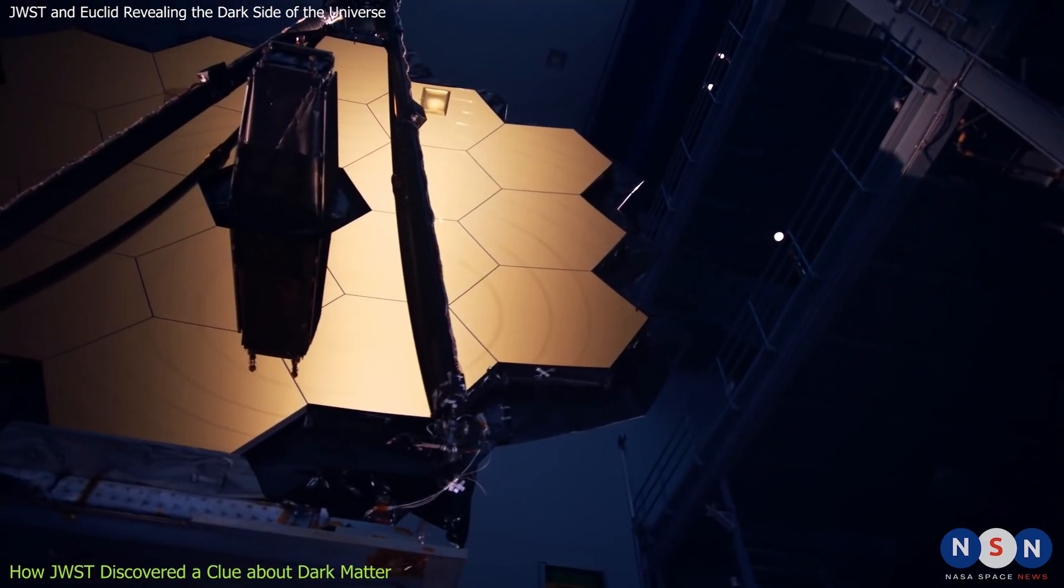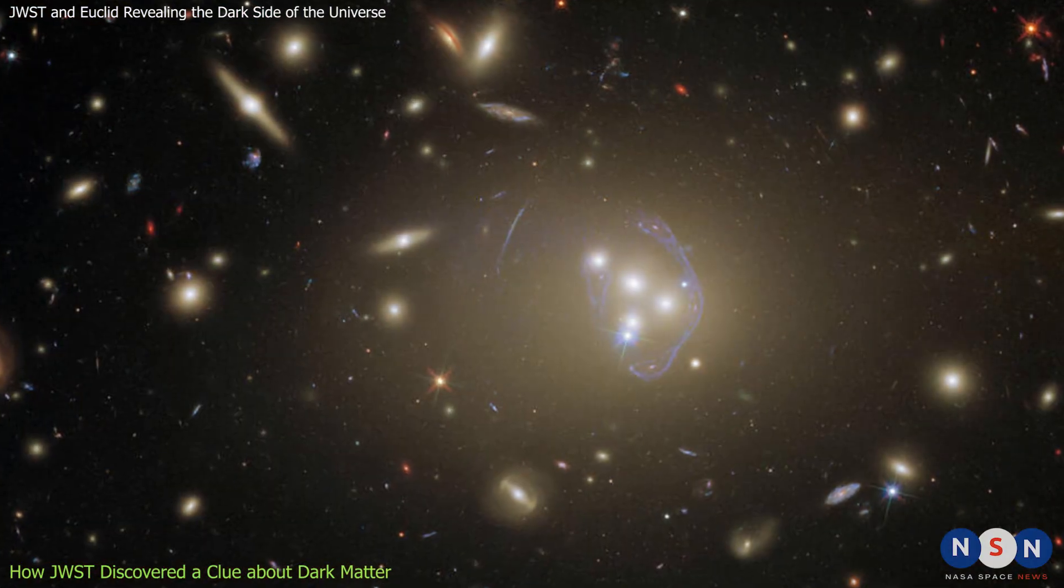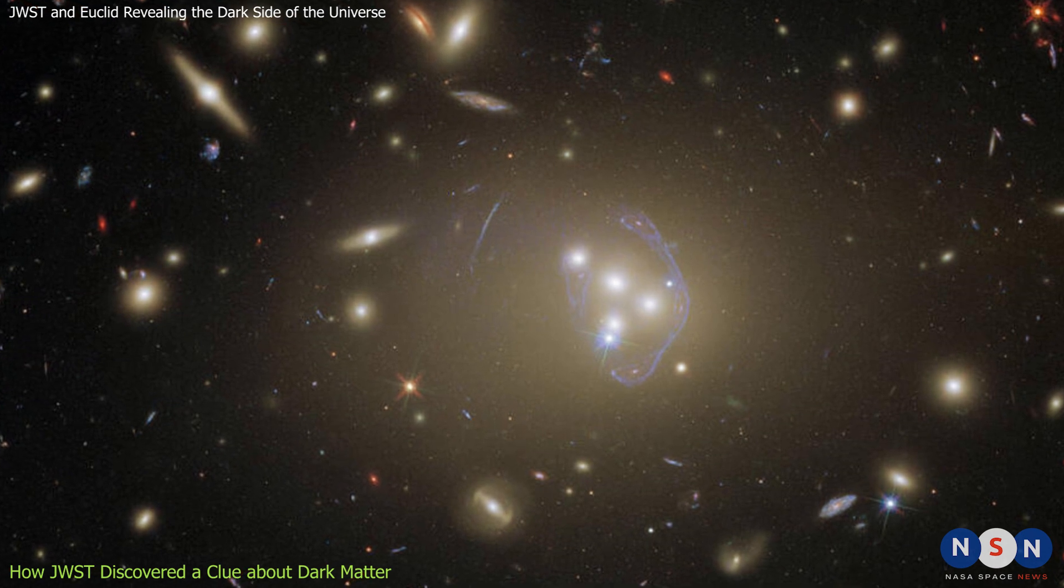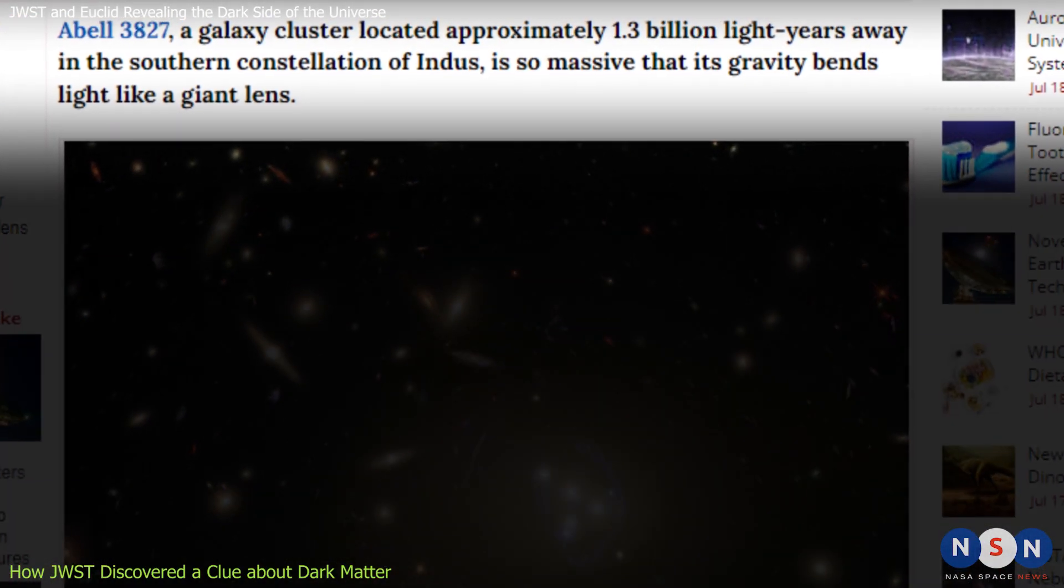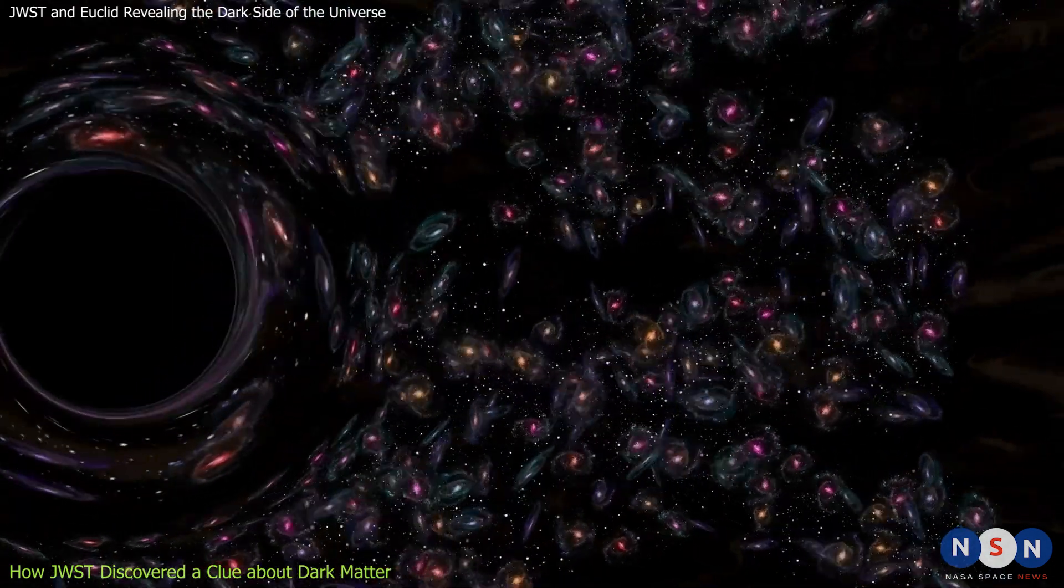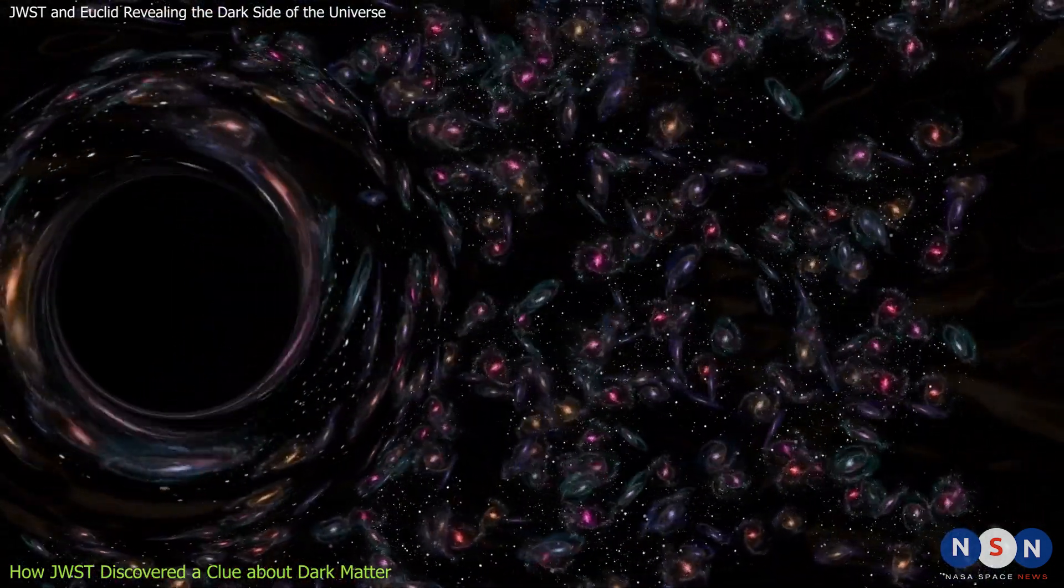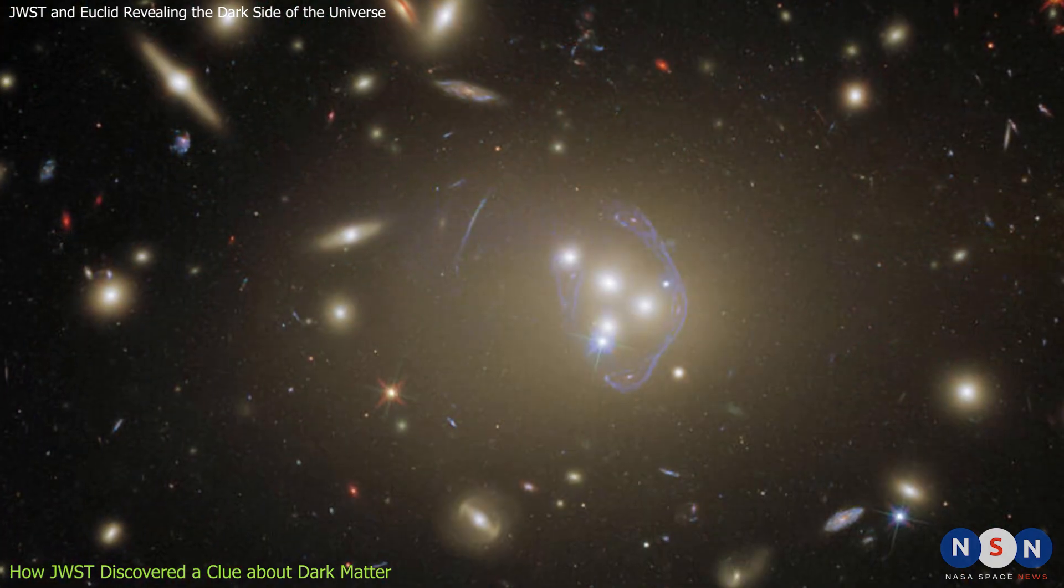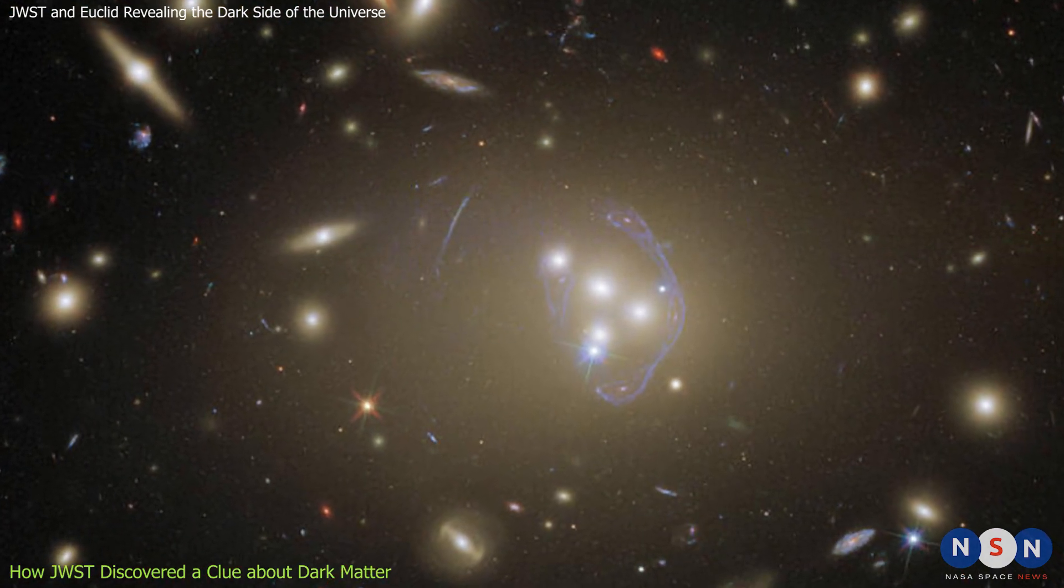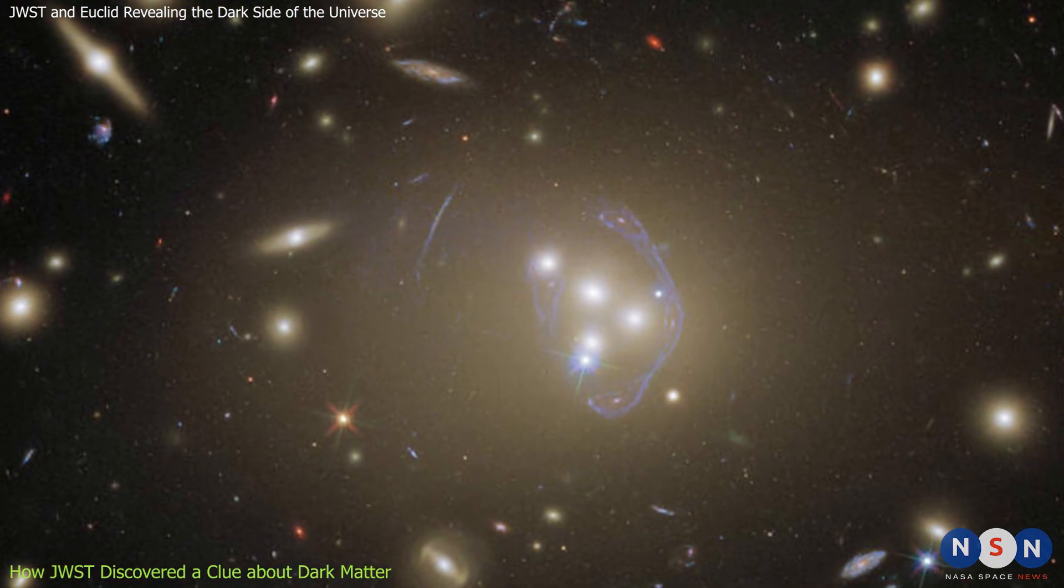Using its powerful instruments, it has observed a galaxy cluster called Abel 3827, which is located about 1.3 billion light-years from Earth. A galaxy cluster is a group of hundreds or thousands of galaxies that are bound together by gravity. But what makes Abel 3827 special is that it contains four colliding galaxies that are surrounded by huge halos of dark matter.